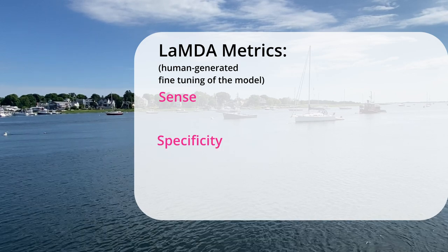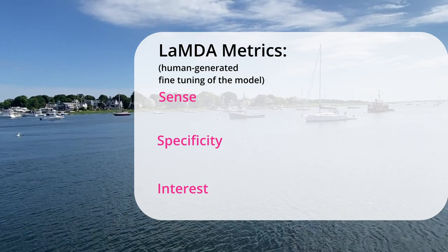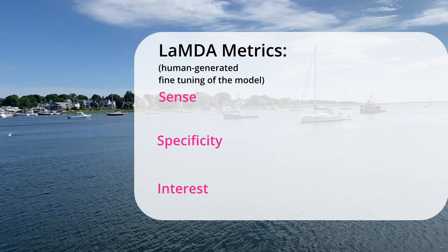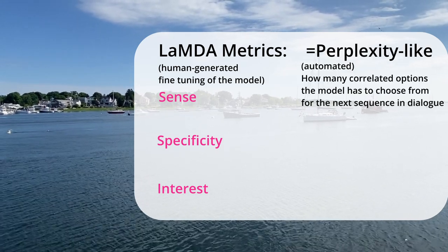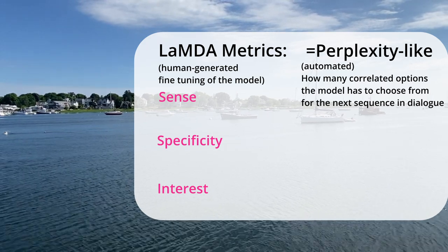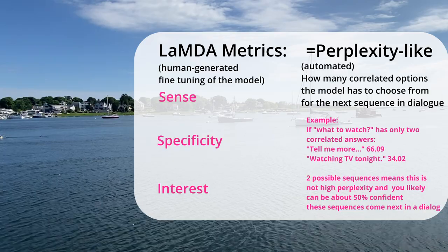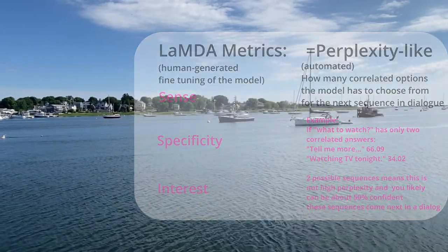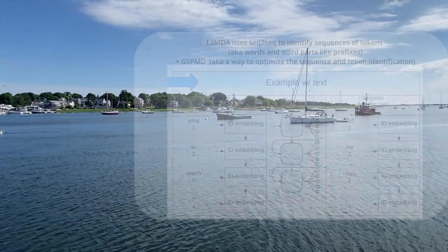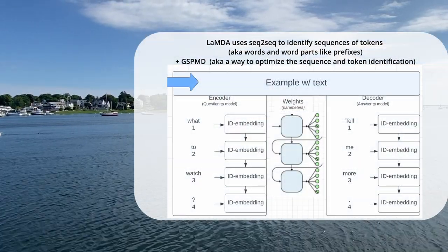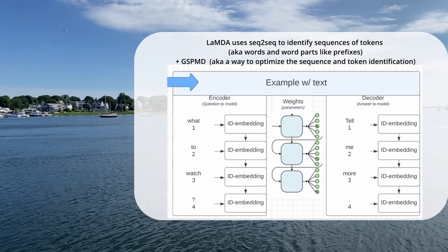The way LaMDA is doing this is through a new metric based on sensibleness, specificity, and interest called SSI, generated by crowdsourced human evaluators. Google AI says SSI is similar to an automated metric called perplexity — basically measuring how many choices the model has to choose from when predicting the most logical next word. The lower the complexity, the higher the confidence of the predicted next word. This is all based on transformer models and specifically seq2seq — sequence to sequence — modeling, comparing sequences of words instead of a single word.